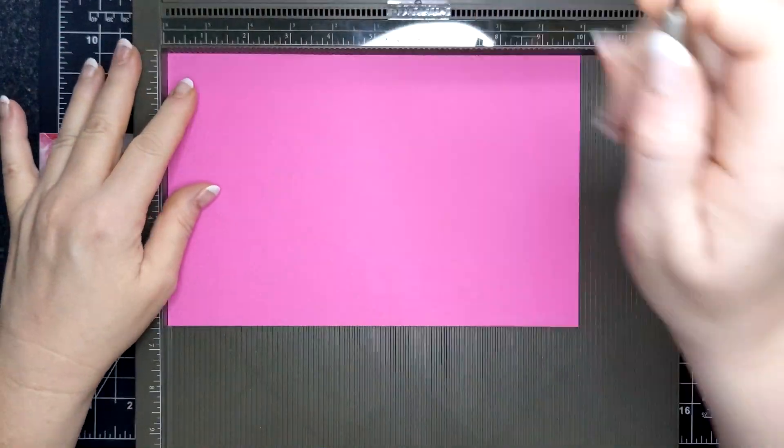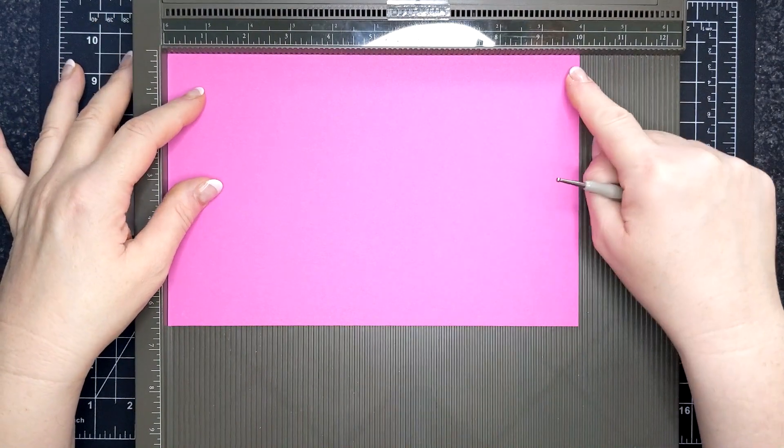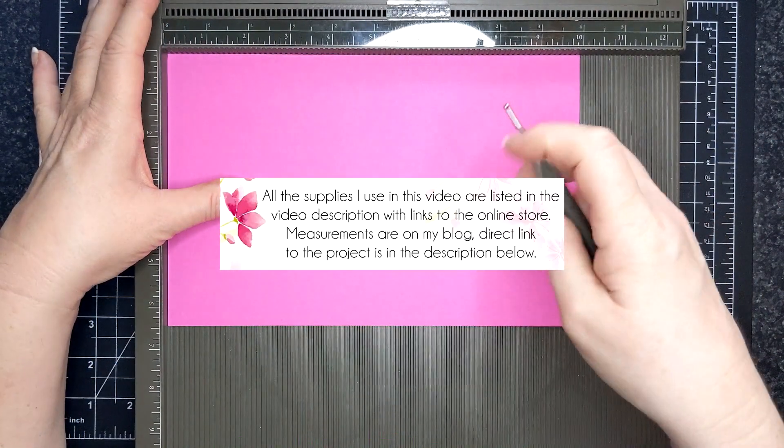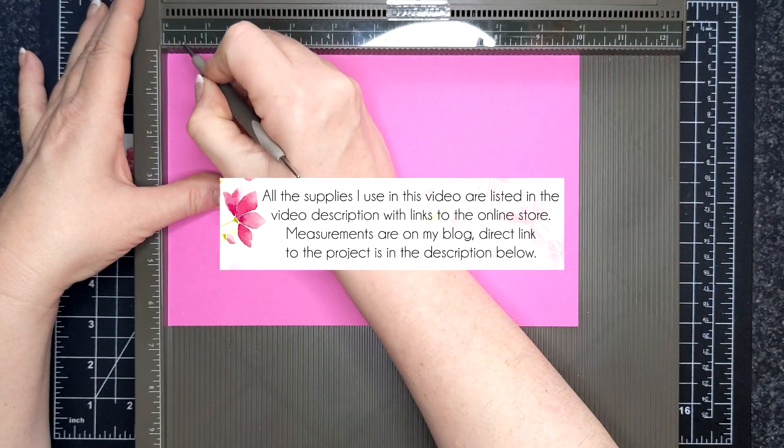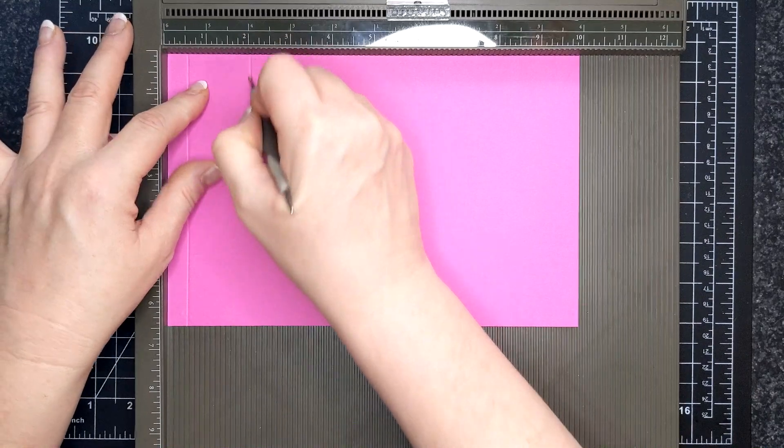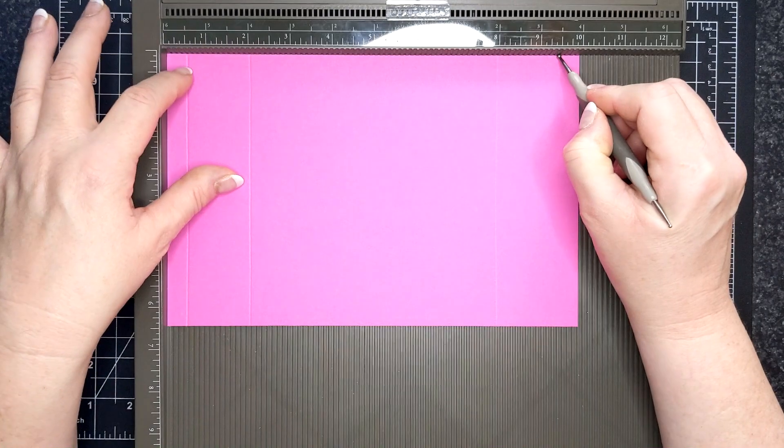I have a piece of Magenta Madness here and it is sized 10 inches by 6.5 inches. On the long side we are going to score at half an inch, at 2, at 8, and 9.5.